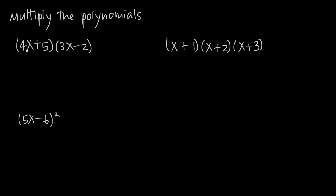In this first example, we have a polynomial 4x plus 5 and a second polynomial 3x minus 2. Because they're both in parentheses and sitting right next to each other, this tells us that we're multiplying them together. More specifically, both of these are binomials because they each have two terms — bi means 2. We're going to use the FOIL method, where FOIL stands for first, outer, inner, last. So we multiply our first terms together: 4x times 3x, which is 12x squared.